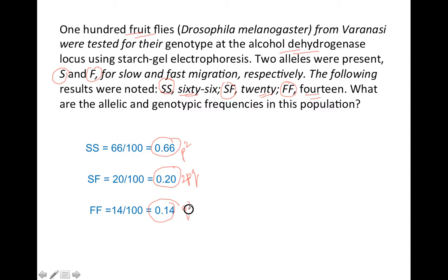Now let's see what is the frequency of the single allele S. It would be SS plus half of SF, why half? Because half of it is S and half of it is F, divided by total population. This comes to 66 plus 20 by 2, that is 10, so 76 by 100, that is 0.76. This is the frequency of the S allele.